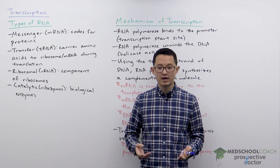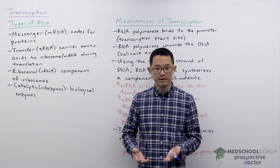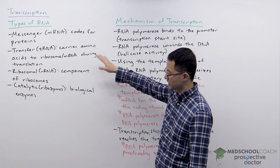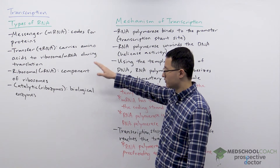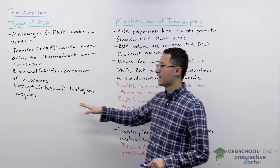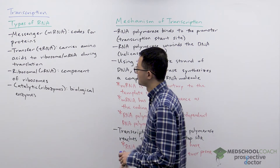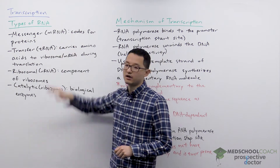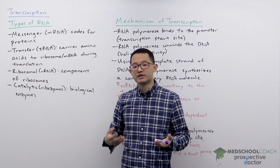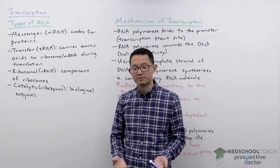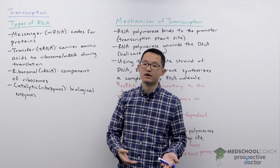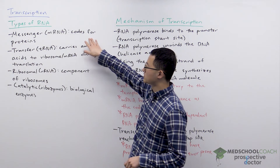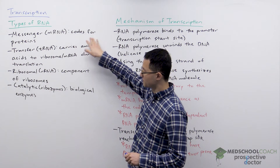There are several types of RNA that can be transcribed from DNA, and that includes messenger RNA, transfer RNA, ribosomal RNA, and catalytic RNA. Messenger RNA is denoted by mRNA, and this is the RNA you usually think of with the central dogma, since mRNA is what gets translated into proteins. So messenger RNA codes for proteins.